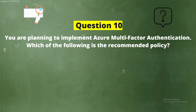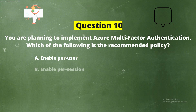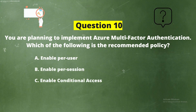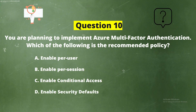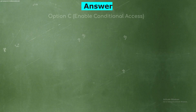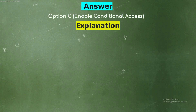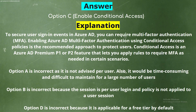Question 10: You are planning to implement Azure Multi-Factor Authentication. Which of the following is the recommended policy? Options: Option A - Enable per user, Option B - Enable per session, Option C - Enable Conditional Access, Option D - Enable security defaults. The correct answer is Option C - Enable Conditional Access. Explanation: To secure user sign-in events in Azure AD, you can require multi-factor authentication. Enabling Azure AD MFA using Conditional Access policies is the recommended approach. Conditional Access is an Azure AD Premium P1 or P2 feature that lets you apply rules to require MFA as needed in certain scenarios.